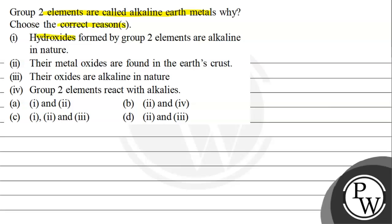First, hydroxides formed by Group 2 elements are alkaline in nature. Second, their metal oxides are found in earth's crust. Third, their oxides are alkaline in nature. Fourth, Group 2 elements react with alkalis. Option A: 1 and 2. Option B: 2 and 4. Option C: 1, 2, and 3. Option D: 2 and 3.